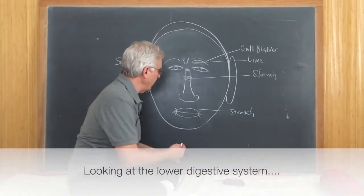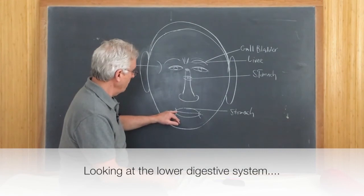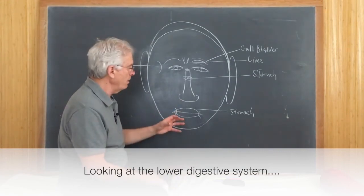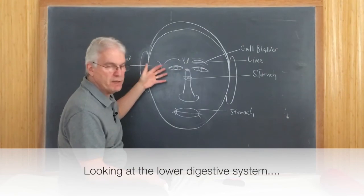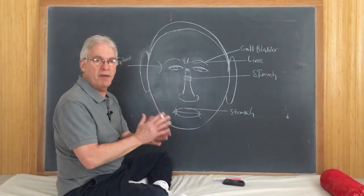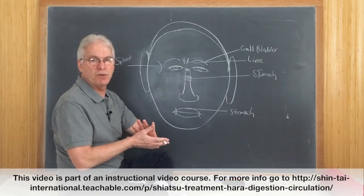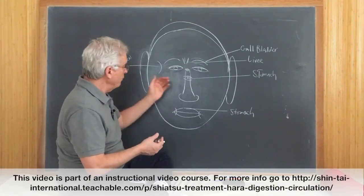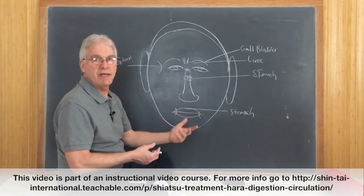Then we can move down from the duodenum to the small intestine. This is where what has happened in the middle digestion, the breaking down, the forming of this kind of pasty substance called chyme moves into the small intestine.